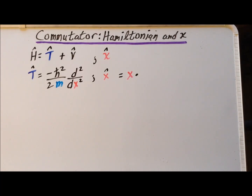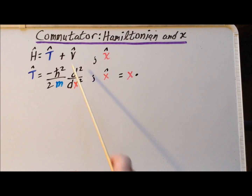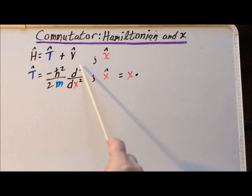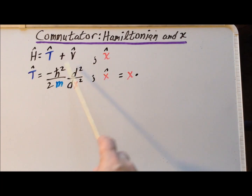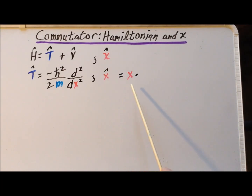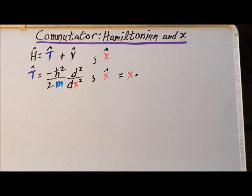The kinetic energy operator T can be expressed as the operation minus h-bar squared over 2m times the second derivative with respect to x, so long as we're in one dimension. The x operator can be very simply undertaken by multiplying from the left by x.